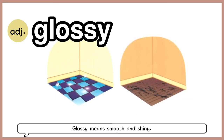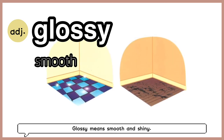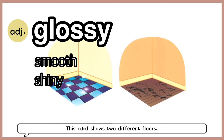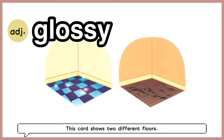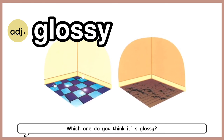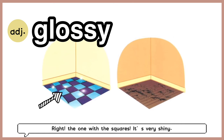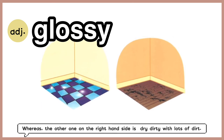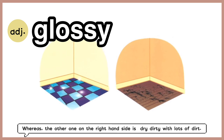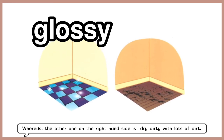Glossy means smooth and shiny. This card shows two different floors. Which one do you think is glossy? Right, the one with the squares — it's very shiny, whereas the other one on the right-hand side is very dirty with lots of dirt.